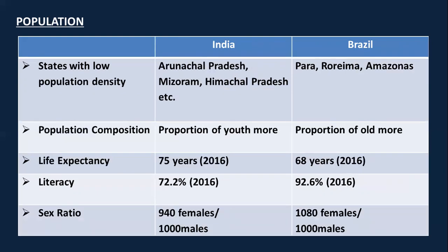Regarding the composition of India's population: India has a higher proportion of youth. Life expectancy in India is 68 years, literacy is 72.2% as of 2016 census, and the sex ratio is 940 females per thousand males. For Brazil: proportion of old population is more, average life expectancy is 75 years, literacy is 92.6%, and the sex ratio is 1080 females per thousand males — meaning Brazil's sex ratio is high whereas India's is low.